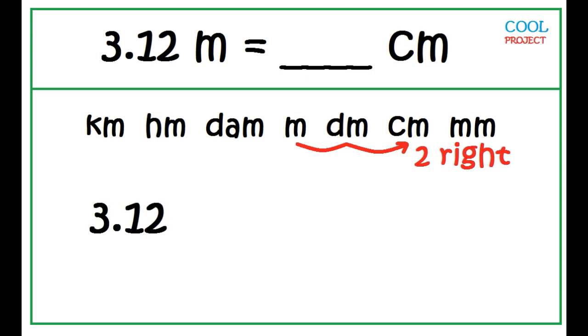Move the decimal point 2 units to the right: 1, 2. 3.12 meters is equal to 312 centimeters.